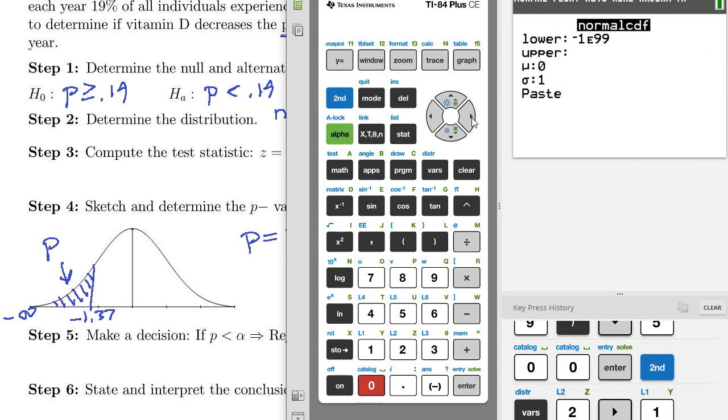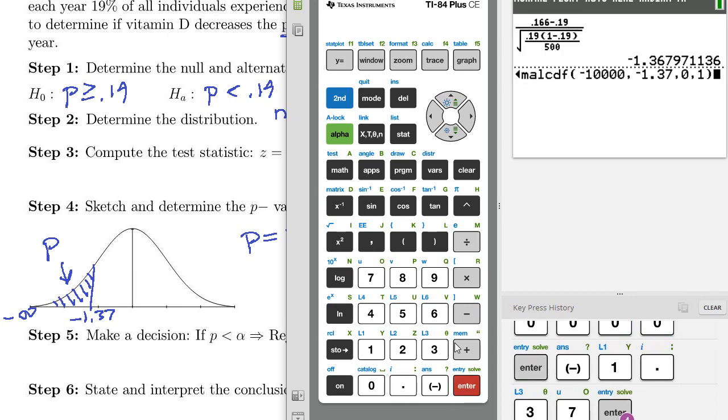Negative 10,000. Upper negative 1.37. And then we can paste it. Enter, 0.0853.